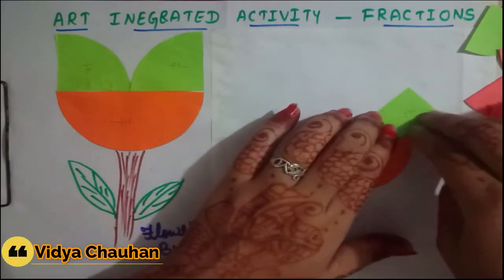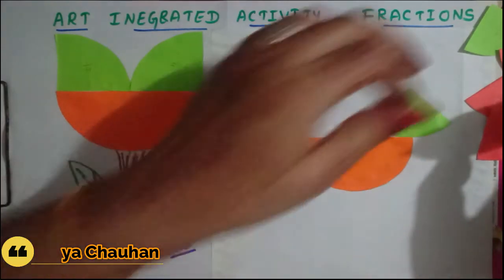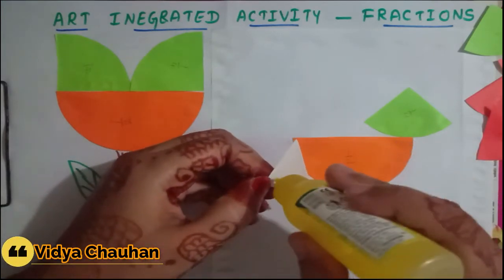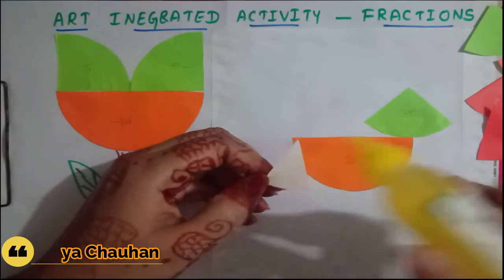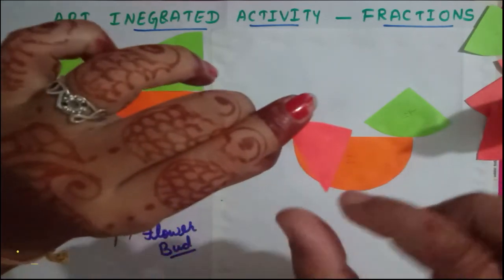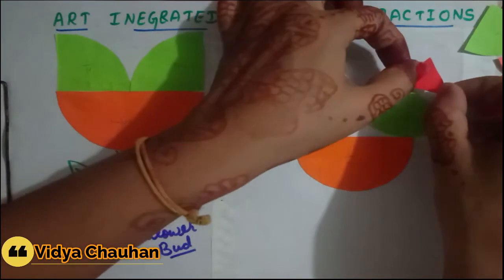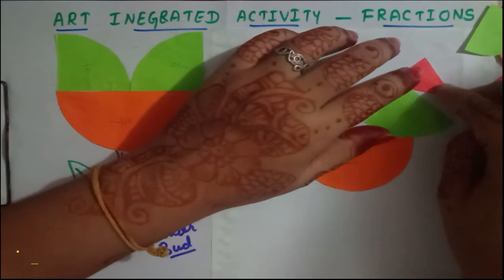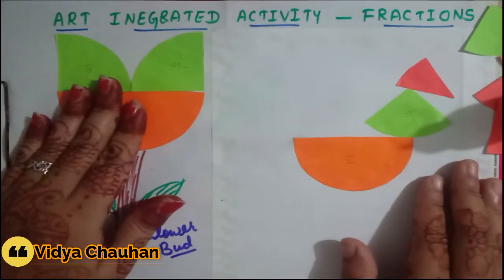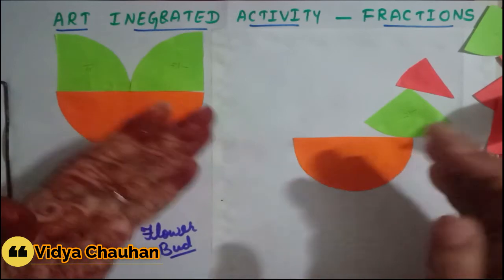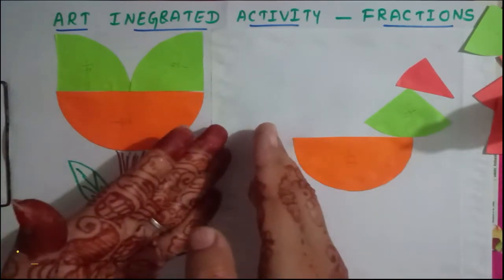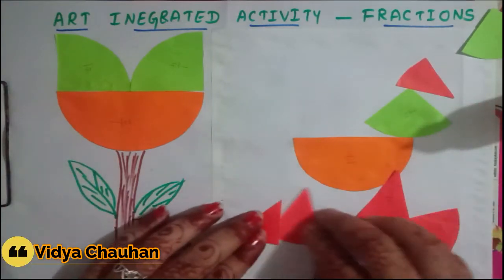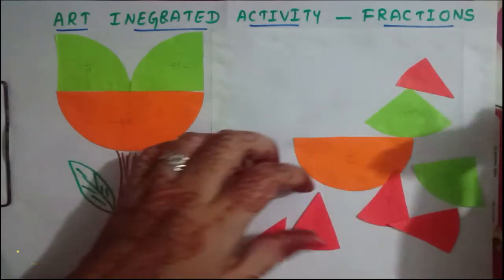The one-fourth piece is the head part. For the beak of the bird, I am going to use a one upon eight part and paste it like this. The next part is the tail — using fractions of one upon eight, I am going to prepare the tail.